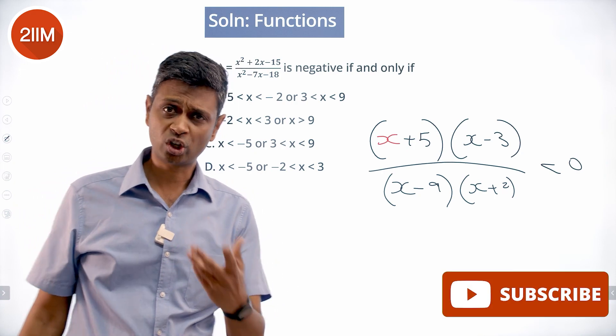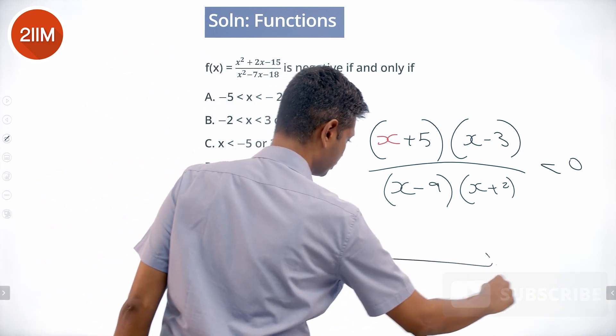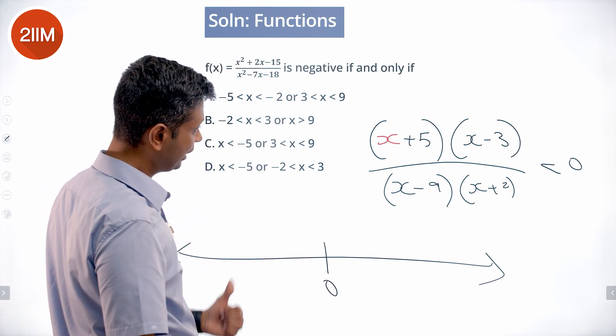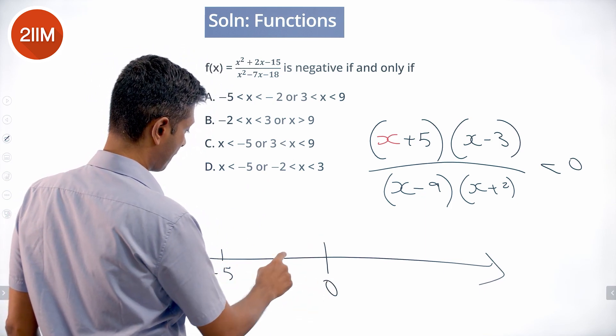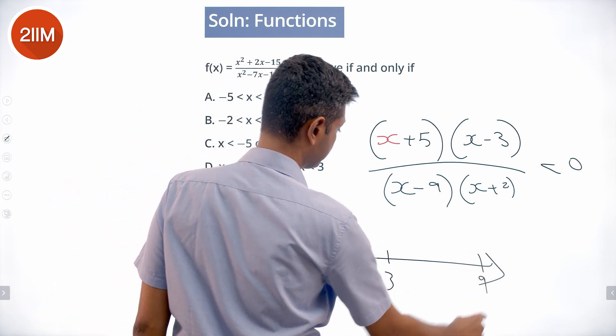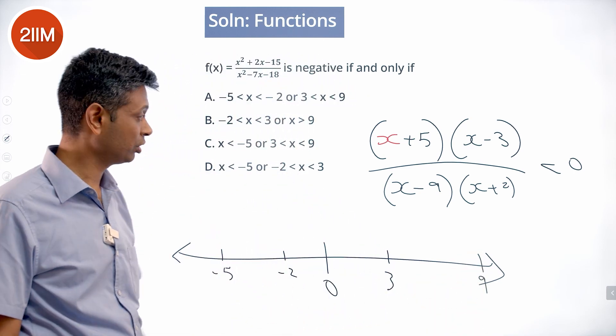Now we think about the roots on a number line. Draw the number line and mark the critical points: -5, -2, 0, 3, and 9. These are the turning points for this expression.